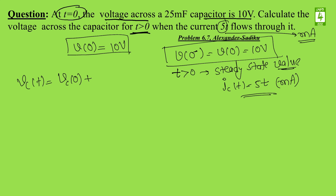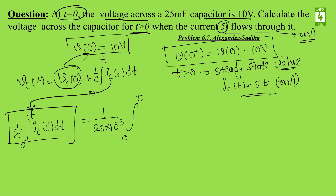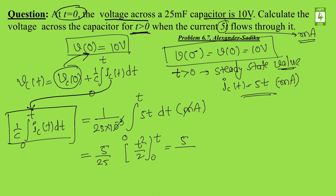So v_c(t) = v_c(0⁻) + (1/C) integral from 0 to t of i_c(t) dt. Since v_c(0⁻) is 10 volts, we solve the integral separately: (1/C) = 1/(25 × 10⁻³), and the current is 5t milliampere. The milliampere (×10⁻³) and the 10⁻³ in the denominator cancel. Then 5 comes out of the integral: 5/25 times integral of t dt, which gives t²/2.